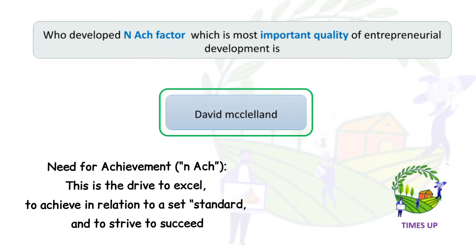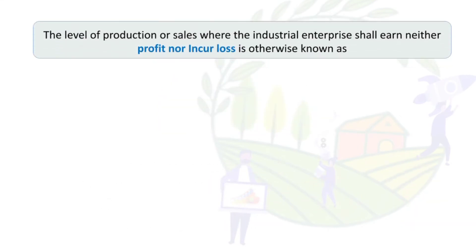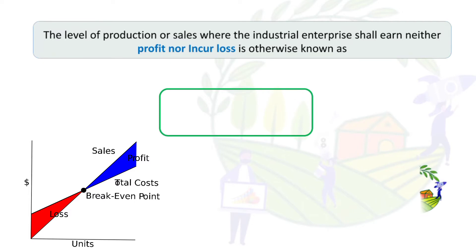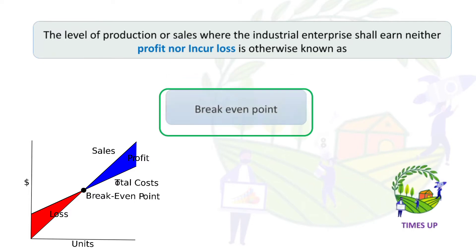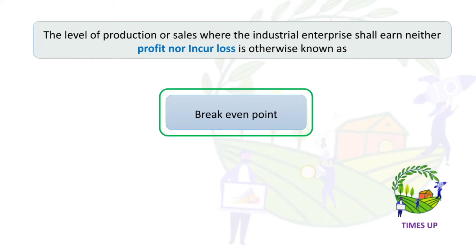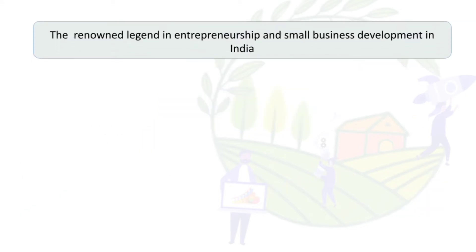Who developed the factor which is the most important quality of entrepreneur development? The answer is David McLaren. The level of production or sales at which an industrial enterprise shall earn neither profit nor loss is otherwise known as the break-even point.